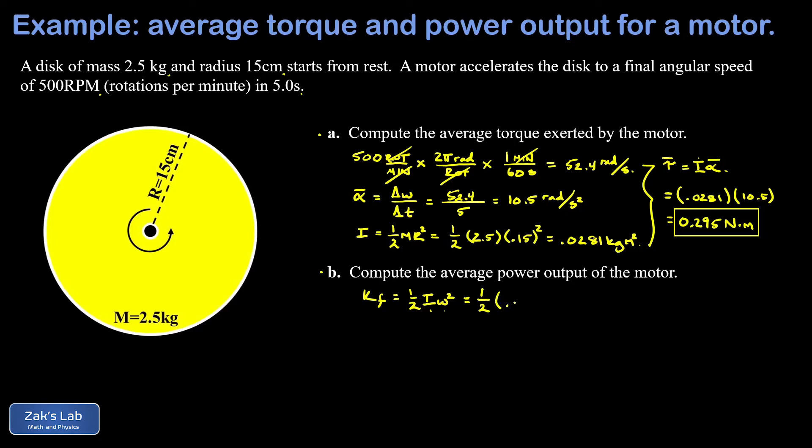We plug in the moment of inertia that we already computed, 0.0281, we plug in the final angular velocity, that's 52.4 radians per second, and we have to square that. And this gives us a rotational kinetic energy of 38.6 joules.